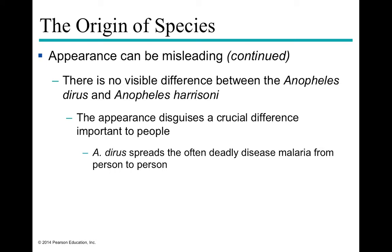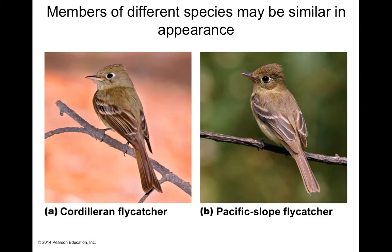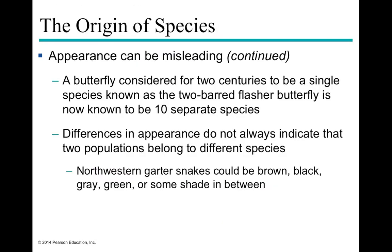Another example where there's no visible difference between organisms are different types of mosquitoes. Anopheles gambiae and Anopheles harrisoni look identical, but a very crucial difference is that one is able to spread malaria and the other is not. So even though they look identical, one of them is deadly and the other is not. These are examples of organisms that are very similar phenotypically but are in fact separate species.